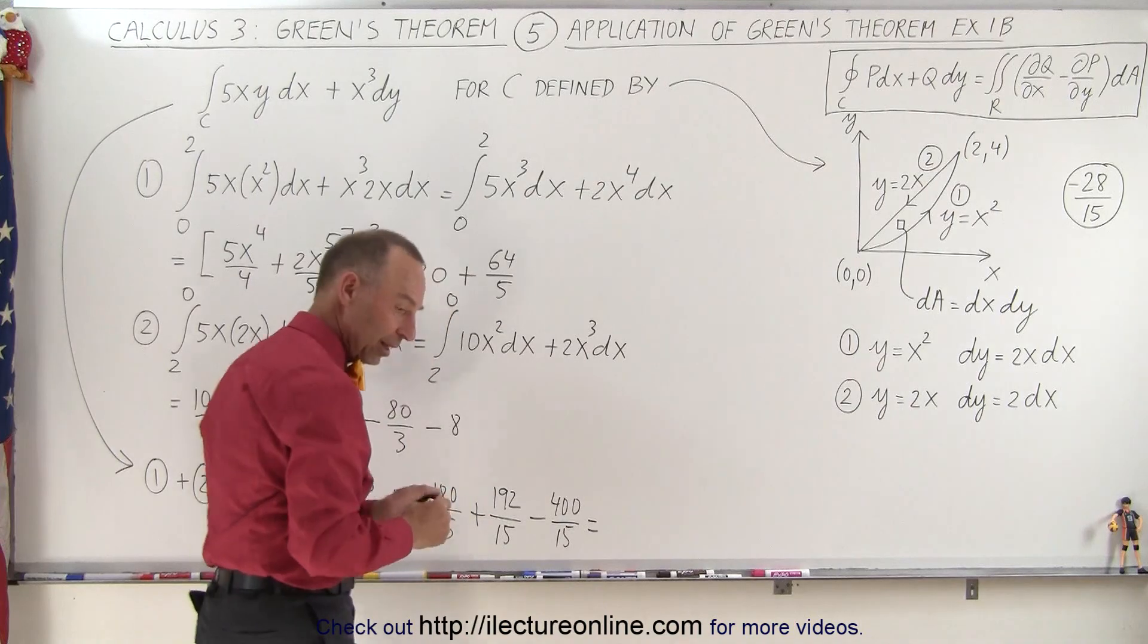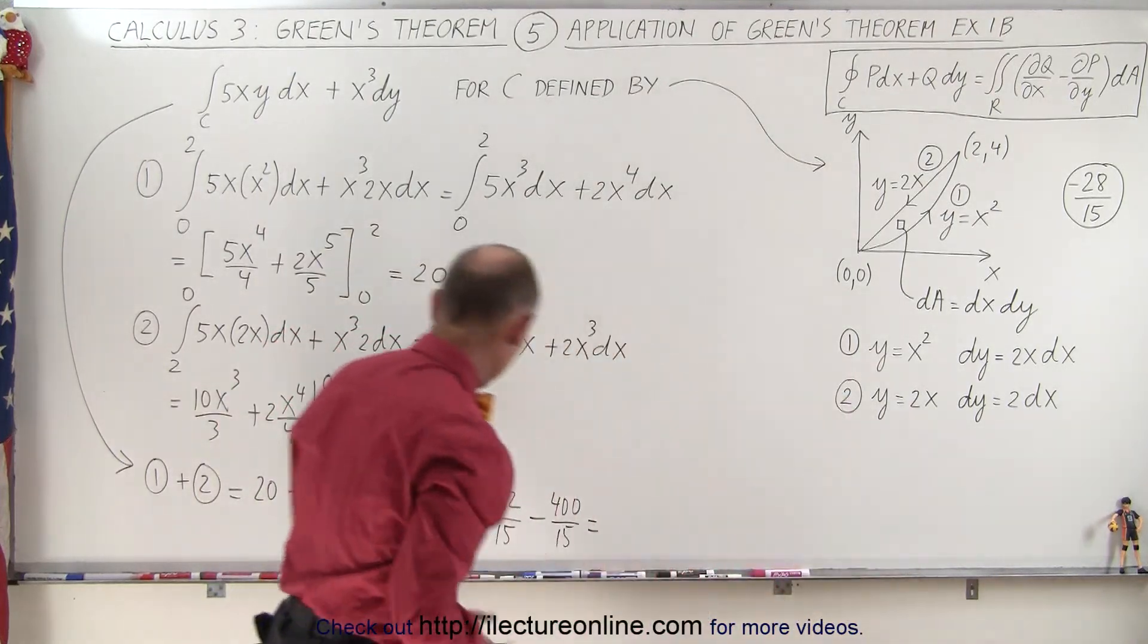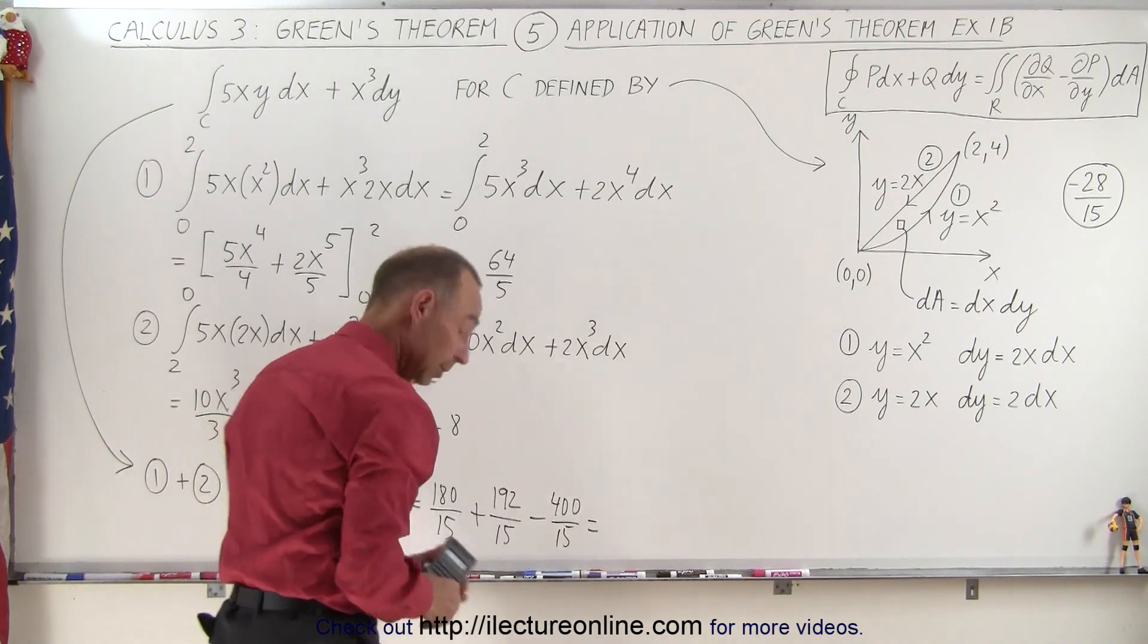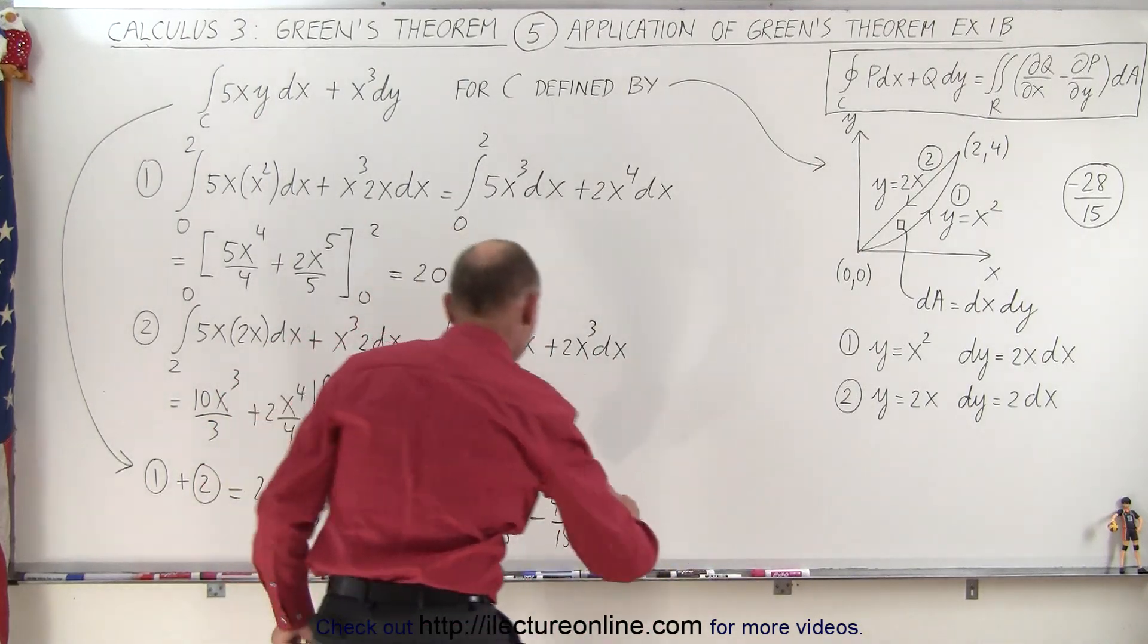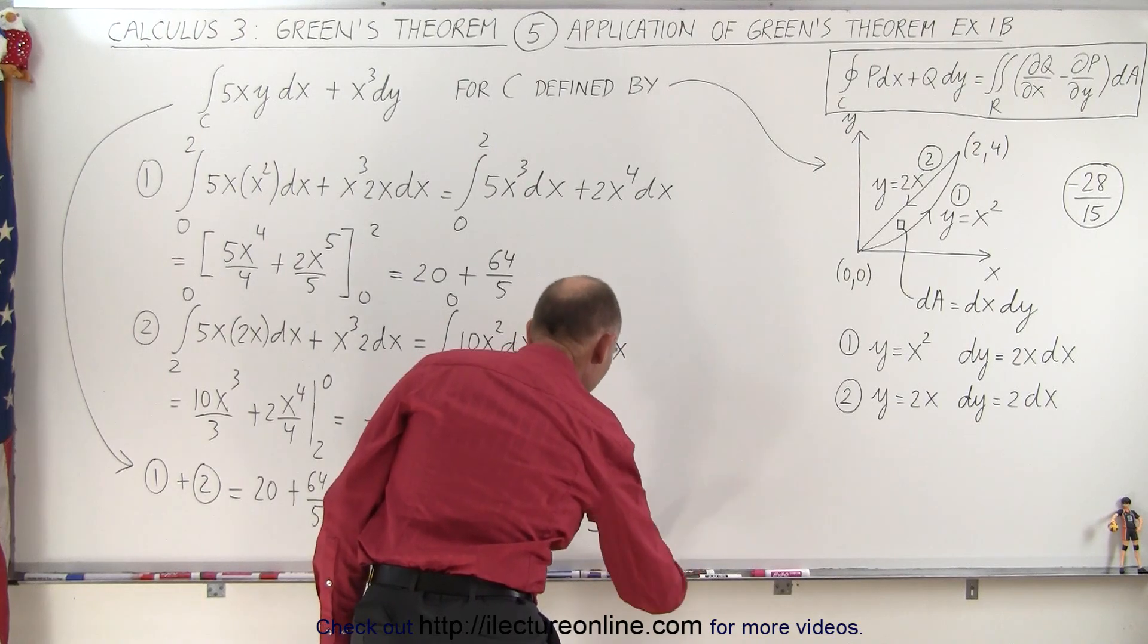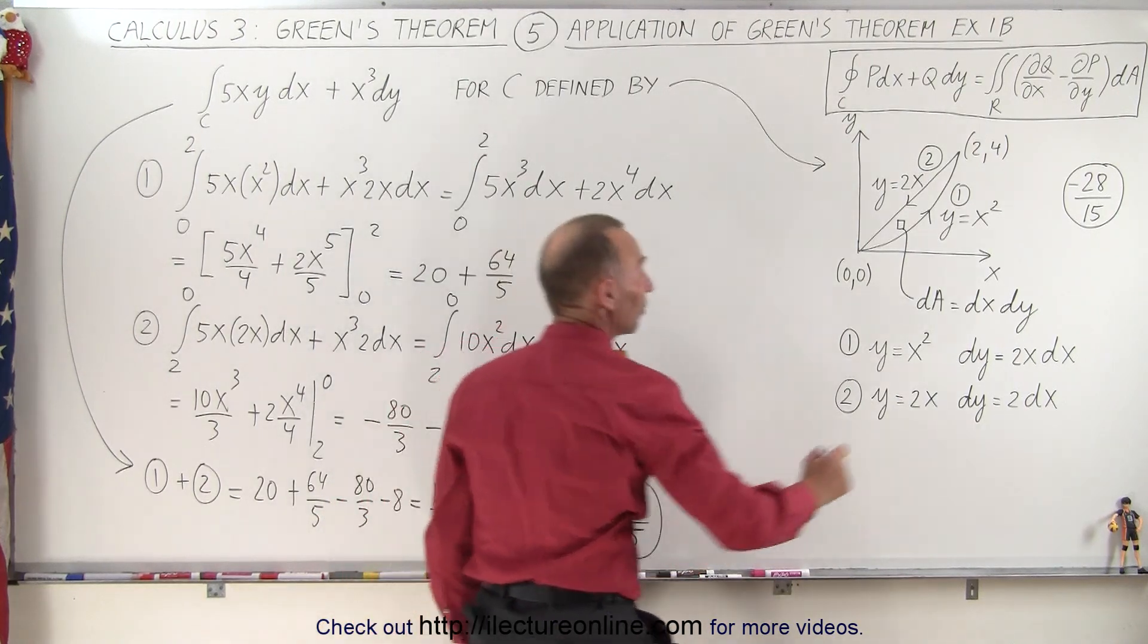Let's get a calculator here, although I'm beginning to realize that's 28. Oh, there we go, don't need a calculator. So this becomes equal to minus 28 over 15, and it sure looks like it was the same result that we got on the previous video when we used Green's theorem.